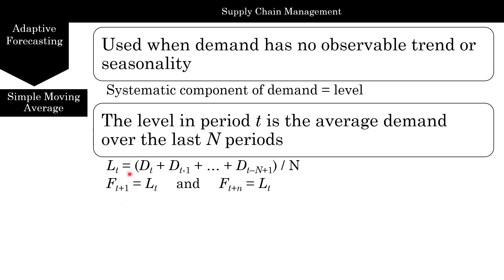The next time period's forecast is the previous time period's level. Once you run out of data, all subsequent forecasts remain at the last level you calculated.